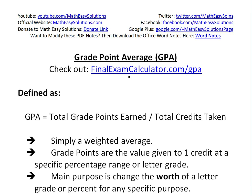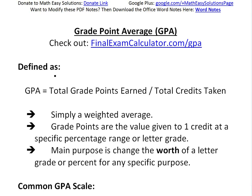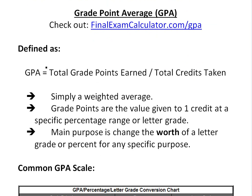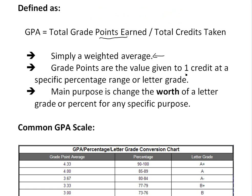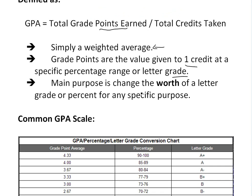Make sure to check out that pretty amazing calculator we have up there. Basically, GPA — or grade point average — is defined as the total grade points earned divided by the total credits taken. This is simply a weighted average of the grade points, which are the value given to one credit at a specific percentage range or letter grade.